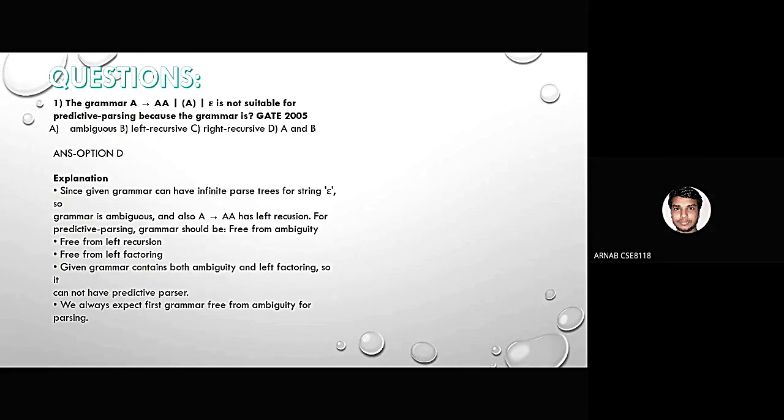Here I will discuss some get previous year questions. The first question is, the grammar A extends to double A slash opening bracket A closing bracket slash epsilon is not suitable for the predictive parser because the grammar is: option A, ambiguous; option B, left recursive; option C, right recursive; and option D, A and B both. Let's come to the explanation.